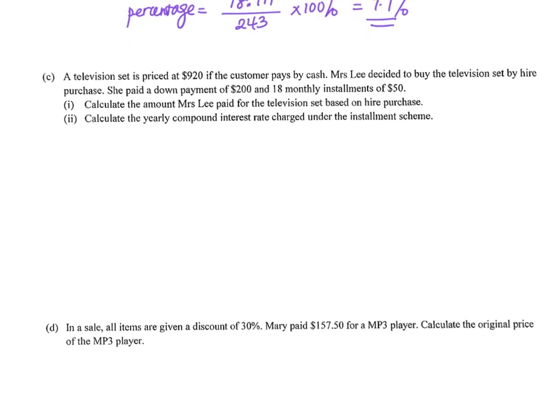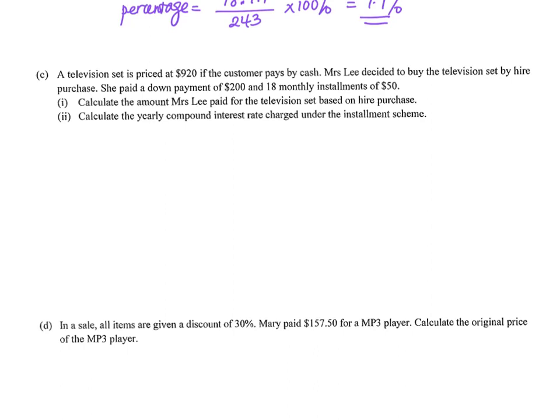Question C: a television set is purchased at $920. The customer pays by hire purchase: a down payment of $200 and 18 monthly installments of $50. The total amount Mrs. Lee paid is $200 plus 18 times $50, which equals $1,100.